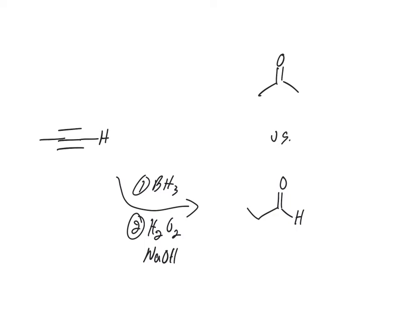You can always remember, aldehydes have to come from boron because that's the only anti-Markovnikov, the only way to get on the less substituted carbon. So if we number our carbons, one, two, three, one, two, three, one, two, three, the oxygen ends up on the less substituted carbon, so it has to be through BH3.